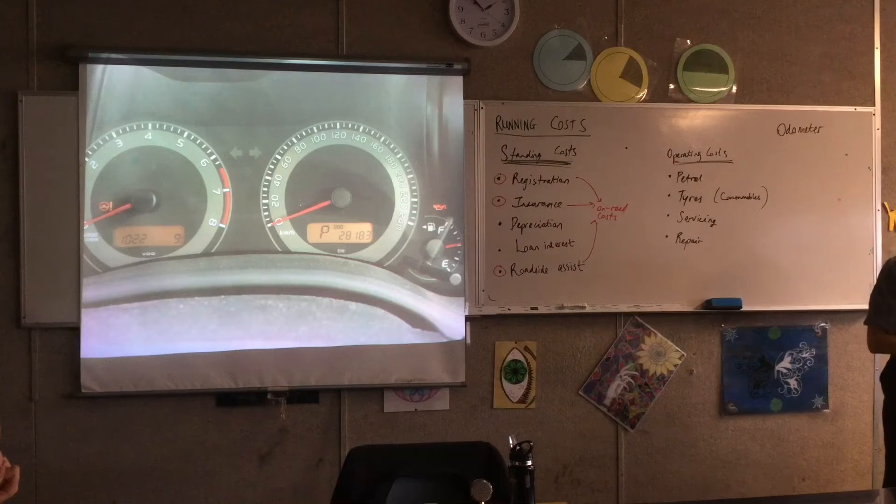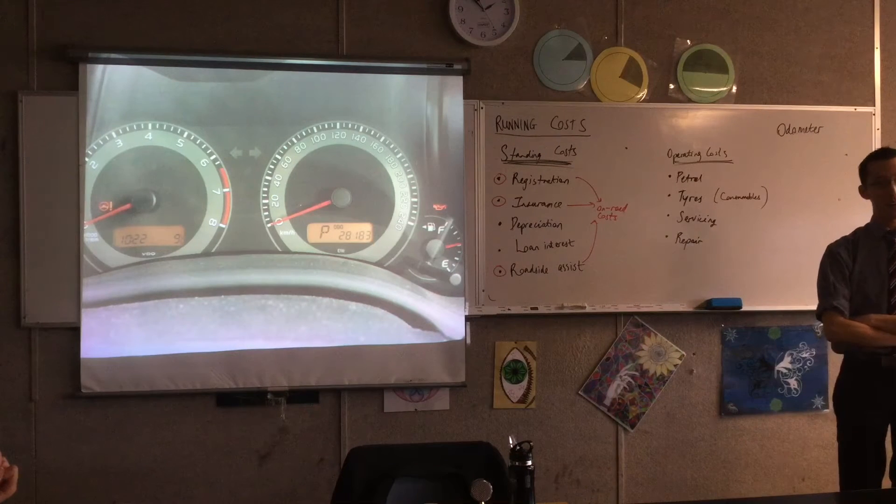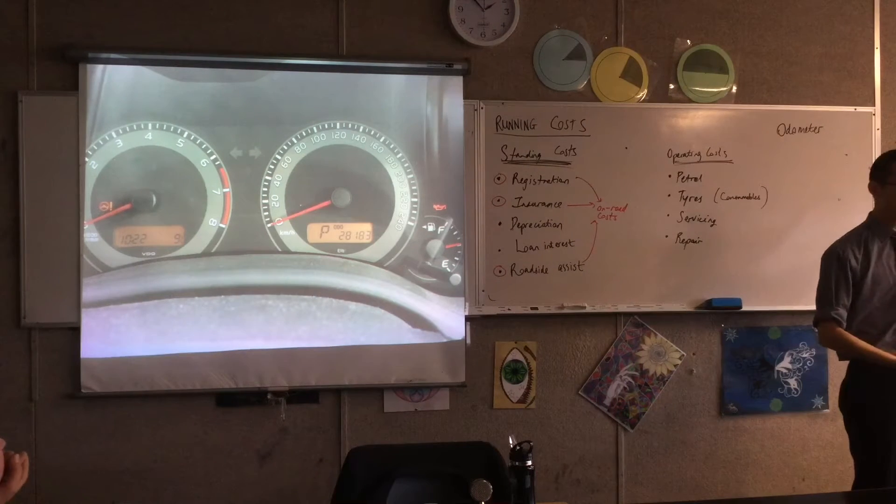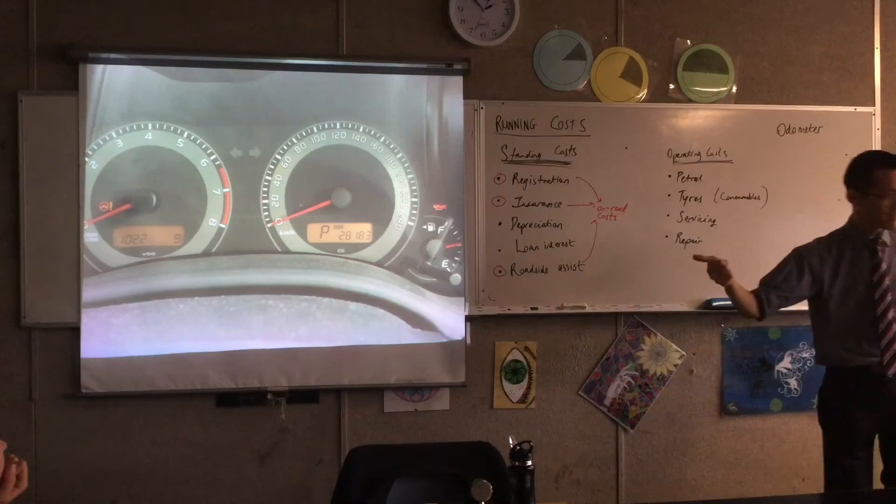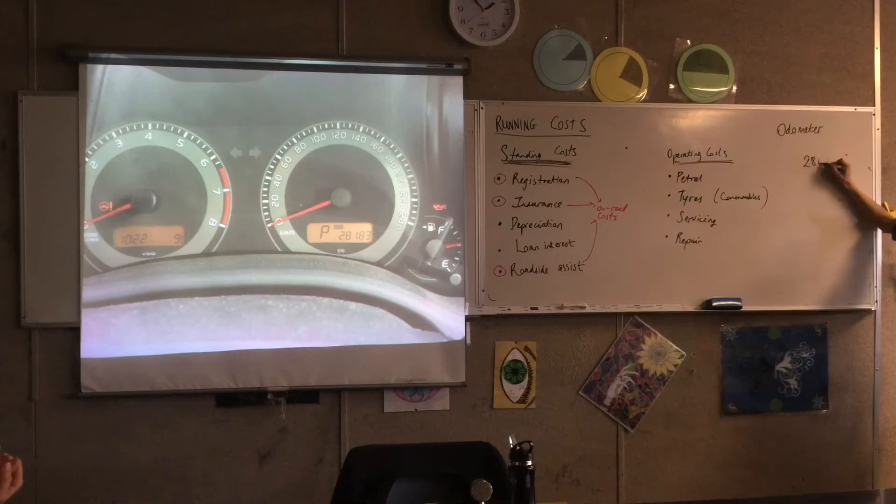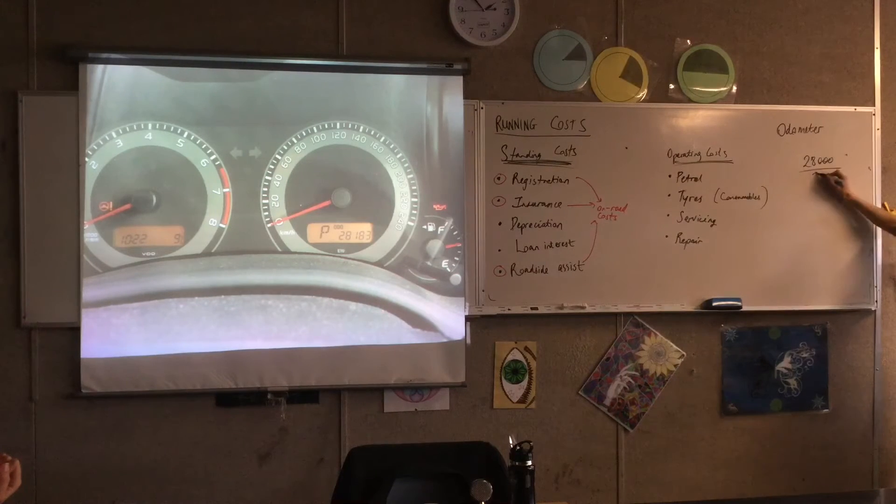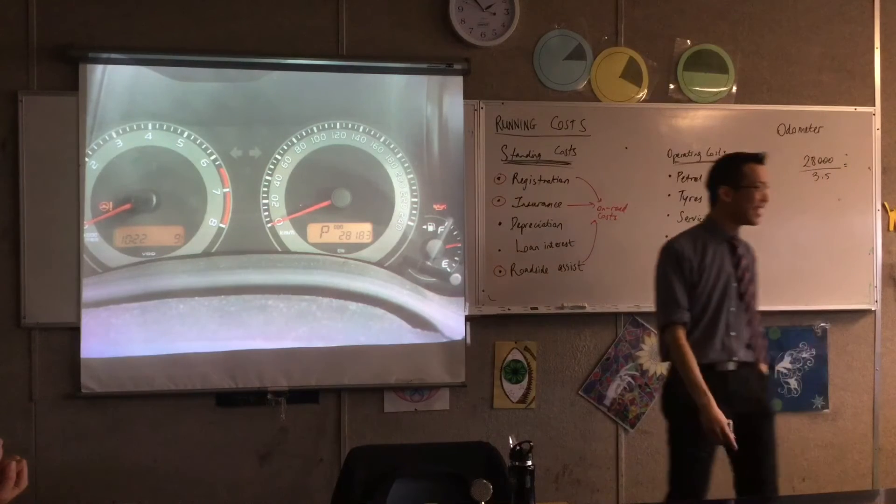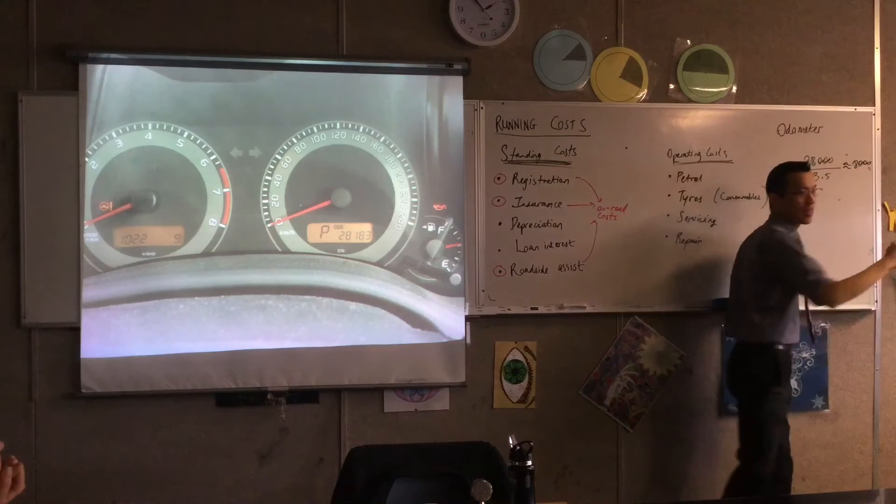The odometer says 28,000 and a bit kilometers. Now I've had this car for three and a half years. I'm very lucky - I live only a couple of suburbs over, not like I have to commute to North Sydney. So think with me: 28,000 divided by three and a half years, how much am I driving every year? Not very far - let's make that approximately 8,000.